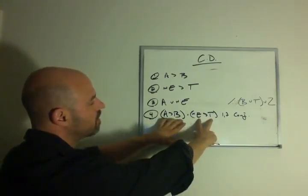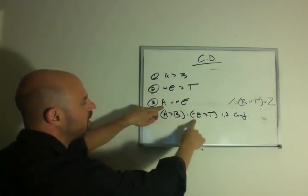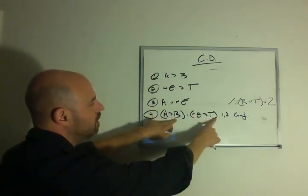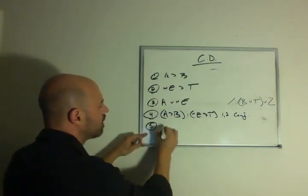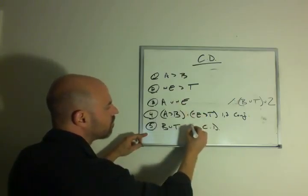Now that we have our two if-then statements together, we can use A or not E to get B or T. That is the constructive dilemma on lines 3 and 4.